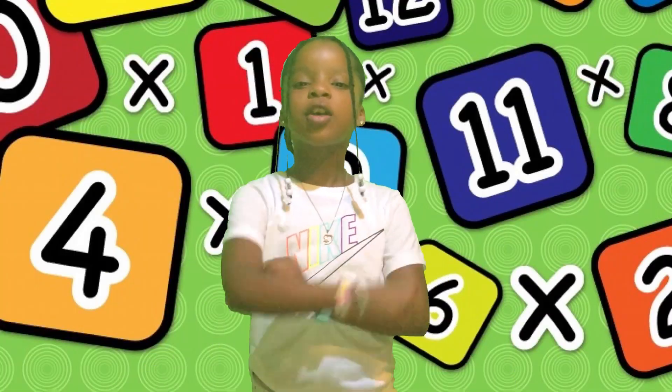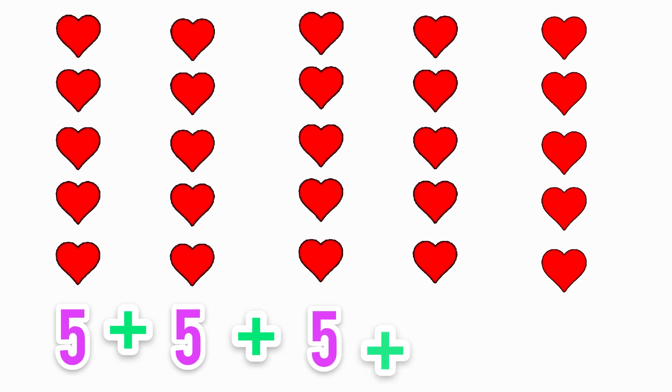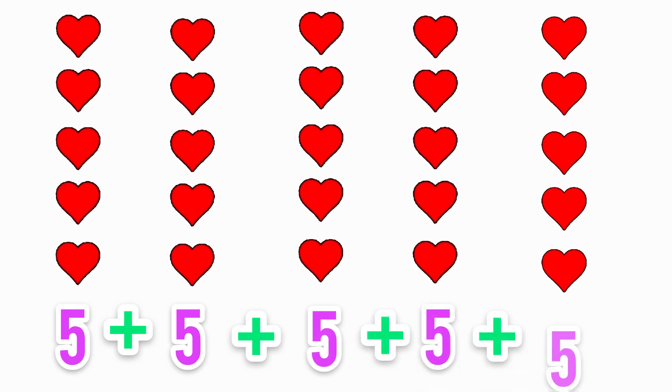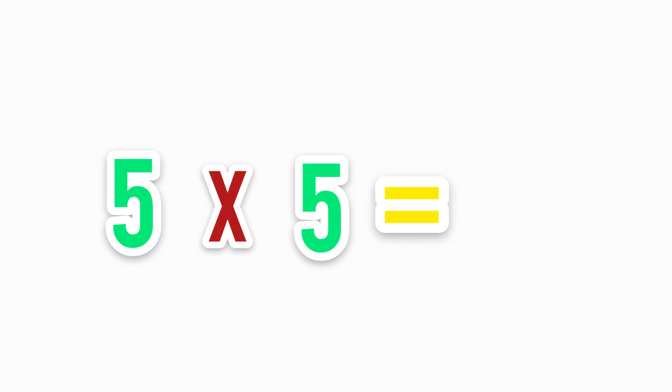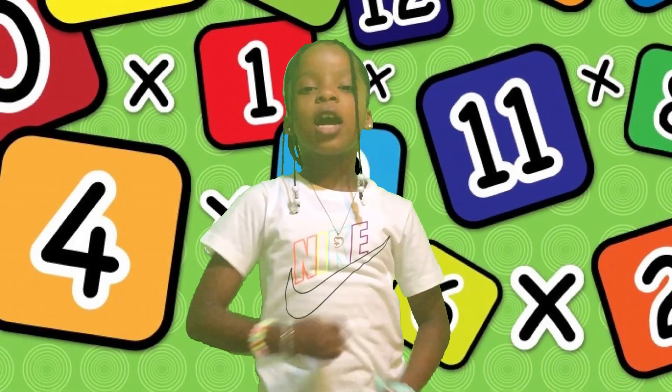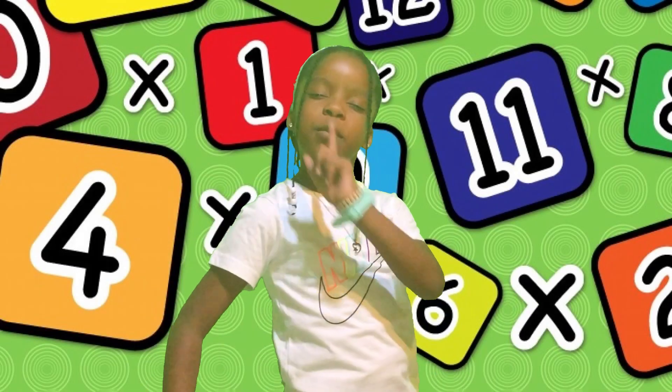Let us look at another example. Here we have five groups of five hearts. Instead of adding five plus five plus five plus five plus five, we simply say five times five. Five times five equals twenty-five.